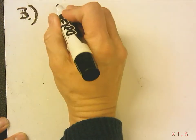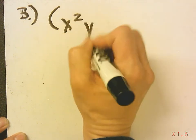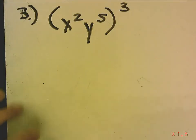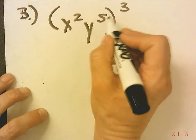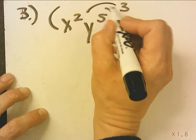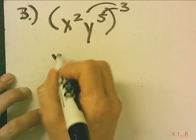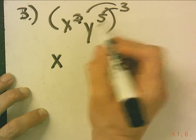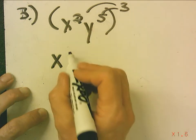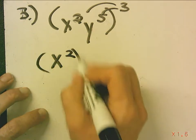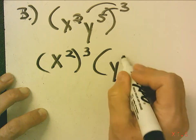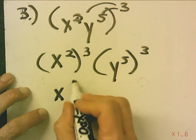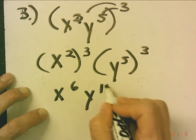Number 3 is x squared y to the fifth, cubed. This is the power of a product. So the rule says we fake distribute — we raise x squared to the third and y to the fifth to the third. So this becomes x squared to the third, y to the fifth to the third, which is 2 times 3: x to the sixth, y to the fifteenth.